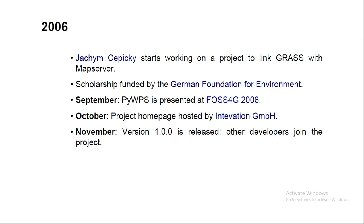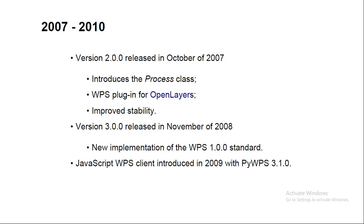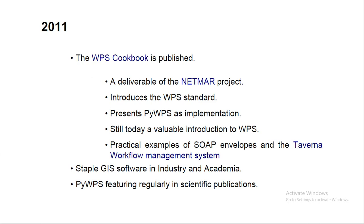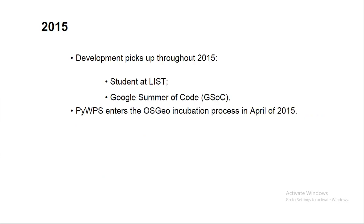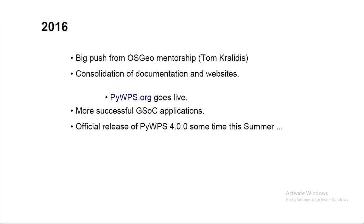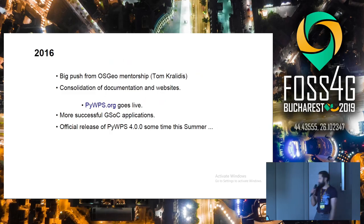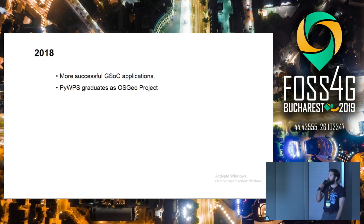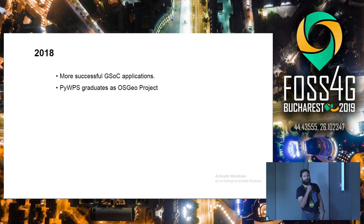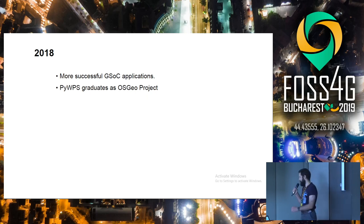The project is rather mature — it started in 2006 and since then it has been developed through multiple versions. Today we are talking about PyWPS4, the current version. There was a big restructure and refactoring of the code, and we graduated last year as an OSGEO project. We were probably the longest project in the incubation process — it took us nine years. But now we are an official OSGEO project and a happy member of the OSGEO family.